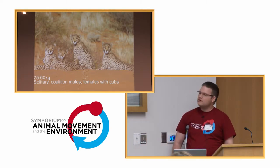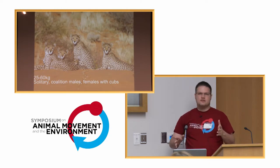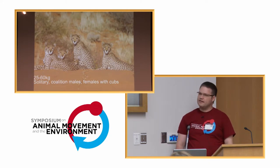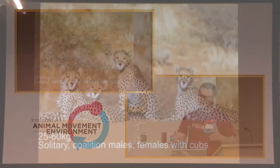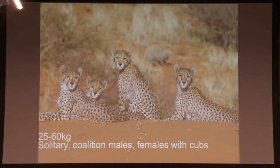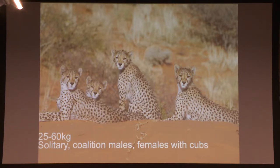Males quite often form coalitions, which are much better at taking down bigger prey. These coalitions are most often sibling groups, but we've also seen unrelated males join an existing coalition of two males, and they go and hunt together.